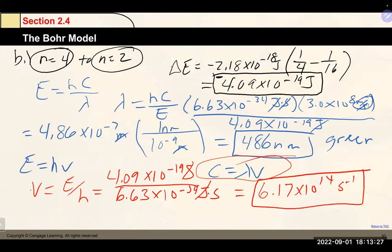Never put a negative wavelength or frequency on an answer — that would be wrong. For the energy calculation, keep the negative; for wavelength and frequency, drop it. Last transition: n = 3 to n = 2.